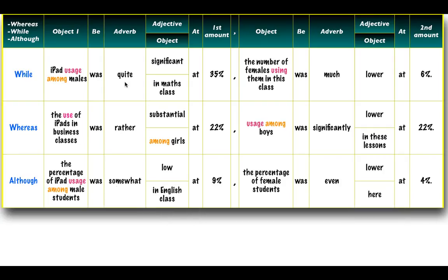The third member of that family is 'although': 'although the percentage of iPad usage among male students was somewhat low in English class at 9%, the percentage of female students was even lower here at 4%.' We often use 'somewhat,' 'rather,' and 'quite' in similar situations — these are rather formal, so they're good for the academic report. This sentence gives a lot of information: how high or low, which category, how much, and who used it. We say 'even lower' when something was originally low and then went lower still.